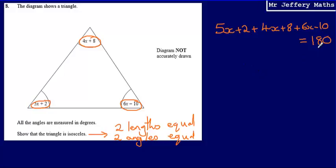So what I now have is an equation I can solve. If I find out what the value of x is, I can then work out what the size of these angles are and I can see whether I've got two angles which are the same in size. So let's start solving this equation.